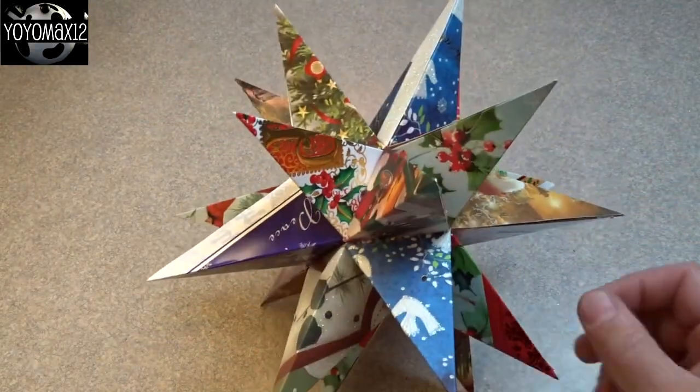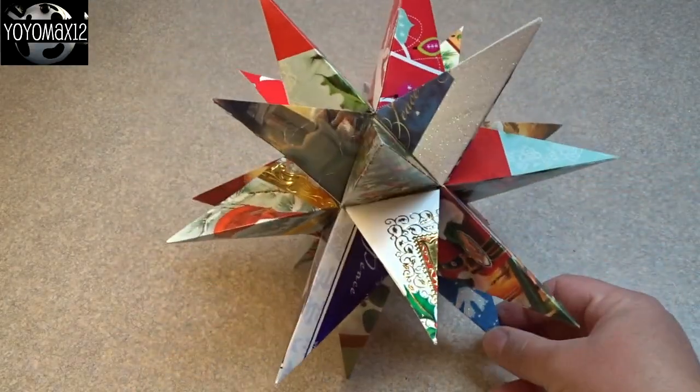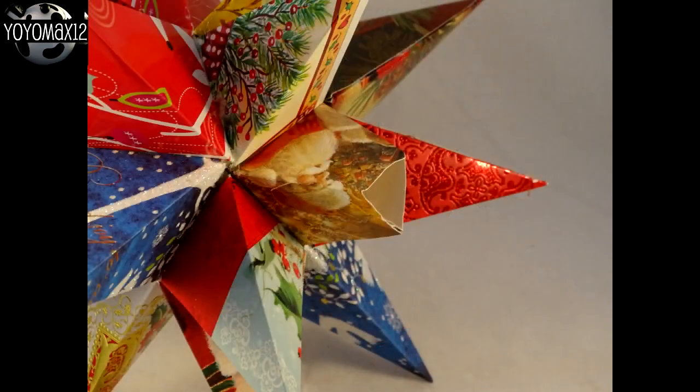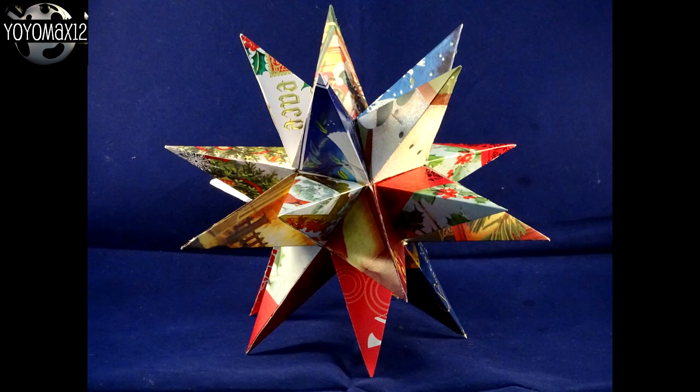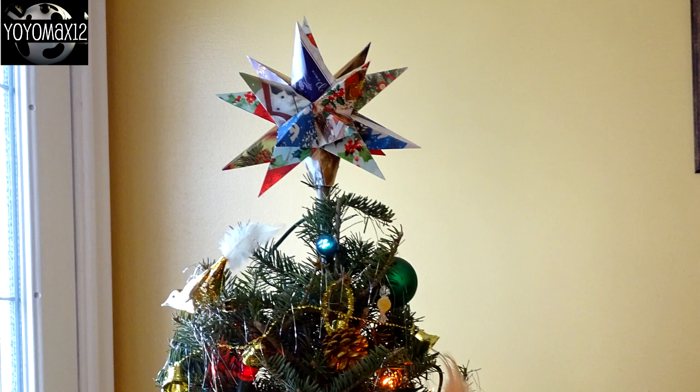Now what you can do with these you can hang them. You can attach a string and hang it from the ceiling. If you make a really tiny one you could use them as ornaments. What I did with mine is I cut one of those points off with a pair of scissors and I put it on the top of my tree as a tree topper. And I'm going to show you that in just a minute. What's nice about this is when you turn them you get a kind of different look at all the different Christmas cards. It's kind of fun. And there it is at the top of my tree.